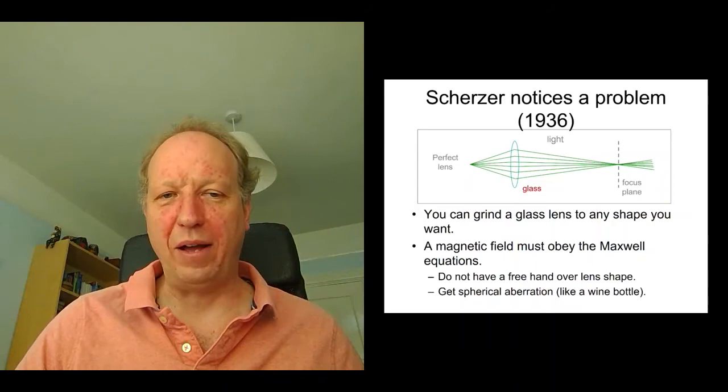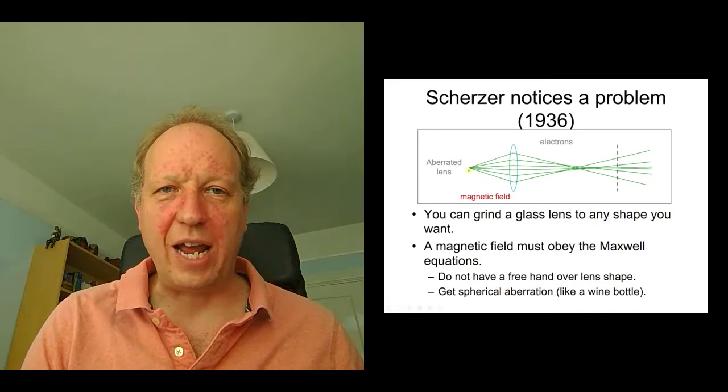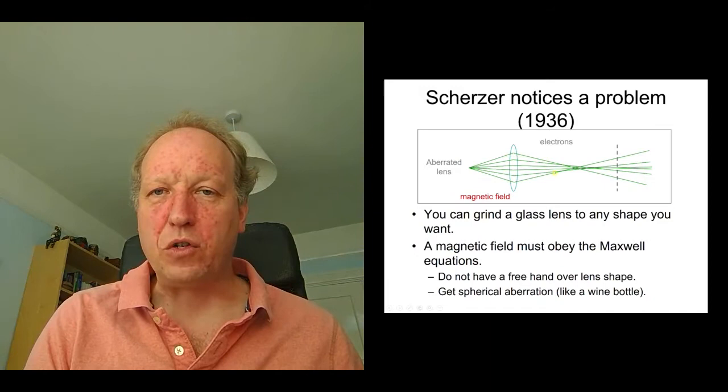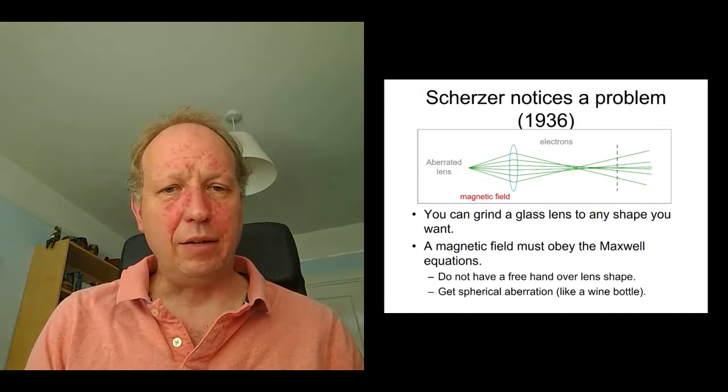And this is a schematic of what happens. What actually happens is the rays which have passed through higher radii in the lens go at higher angles, get focused too strongly, and don't cross over now at the correct point. They cross over too early. So this is a fundamental problem.